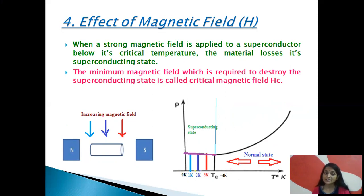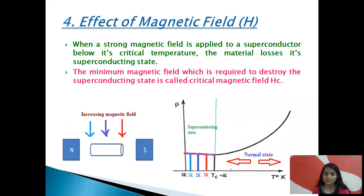But when we increase the magnetic field above the critical magnetic field HC, the superconducting material loses its superconducting property and behaves like a normal material. Correspondingly, when we decrease the temperature of the material below the critical temperature, the material again behaves like a superconductor. If we increase the magnetic field above HC again, the material once more loses its superconducting property.